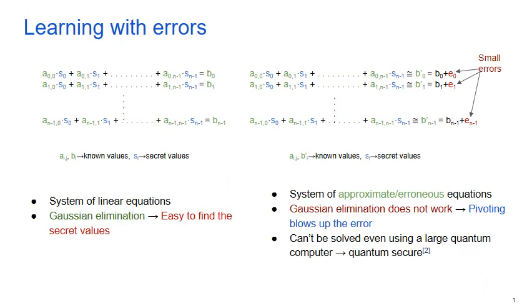Consider the above two set of linear equations. On the left, the secret values can be easily found using Gaussian elimination from the set of known values. But on the right, the Gaussian elimination doesn't work, as the small errors that have been added to the right-hand side of each equation grows larger and larger in each pivoting step. It has been shown that this problem known as LWE or learning with errors cannot be solved even using quantum computers.